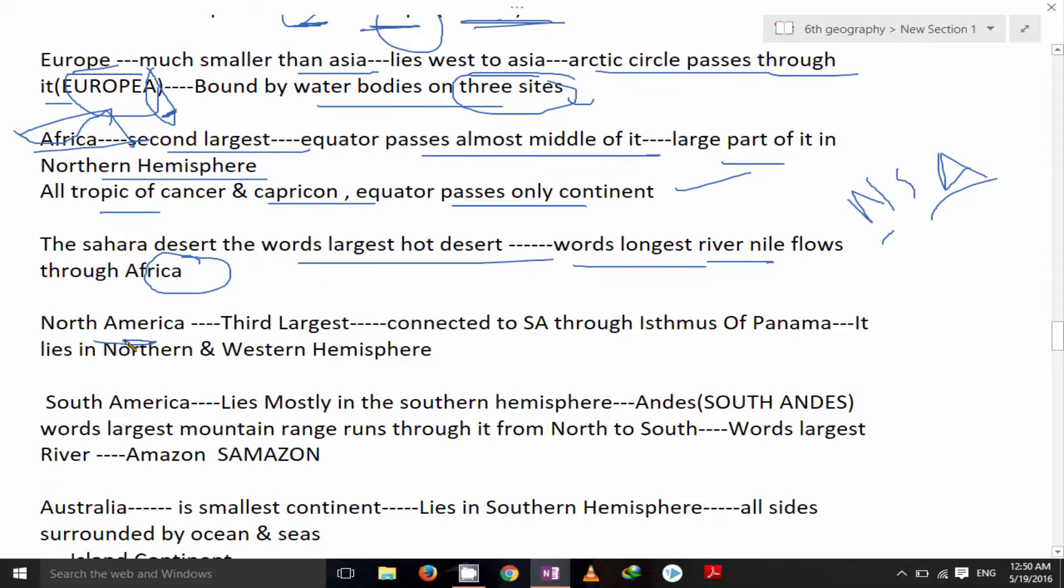North America is the third largest continent which connected South America through Isthmus of Panama. It lies in northern and western hemisphere. South America lies mostly in southern hemisphere.